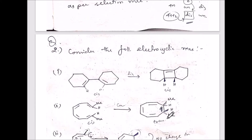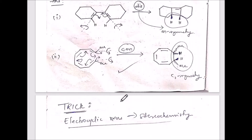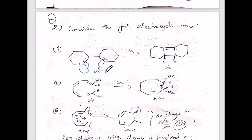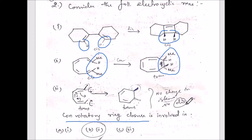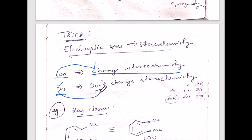The second question asks you to identify which reaction involves a con rotatory ring closure. Before answering, let me explain a useful trick. Con starts with C — change stereochemistry. Dis starts with D — don't change stereochemistry. Just remember: con means change stereochemistry, dis means don't change stereochemistry.